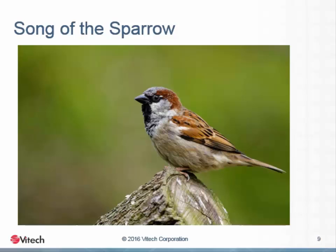The large-scale slaughter of sparrows produced an overpopulation of insects, making it necessary for the Chinese government to launch a campaign to eradicate the insect pests. This was accomplished by distributing pesticides, which reduced the insect populations. However, once again the strategy failed to account for all ramifications — not only were insect pests eradicated, but insect pollinators like honey bees fell victim as well. Food crops went unpollinated, resulting in crop shortages that approached the levels of the losses originally attributed to the sparrows. This series of unintended consequences had brought the Chinese people right back to their original position of food shortages.